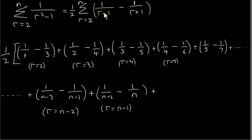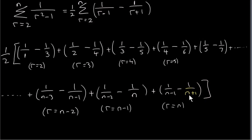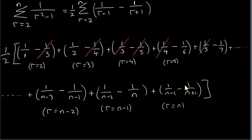Finally, the last term with r equals n gives 1 over (n minus 1) minus 1 over (n plus 1). Now we can ignore all brackets since we're just dealing with addition and subtraction, so we can add all these numbers any way we like. We notice that minus 1/3 plus 1/3 gives 0, minus 1/4 plus 1/4 gives 0, minus 1/5 plus 1/5 cancels out. So most of this series will actually cancel. In fact, the second part of each term cancels with the first part of the term that is two terms ahead.